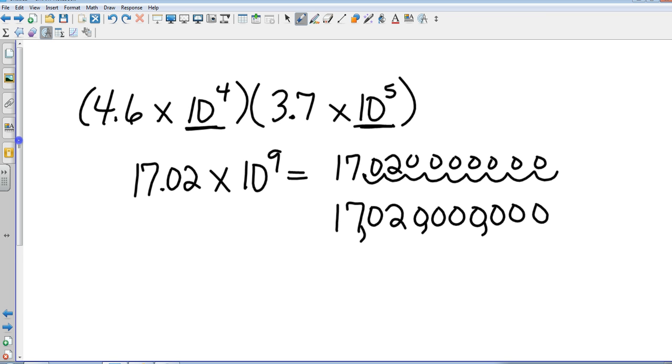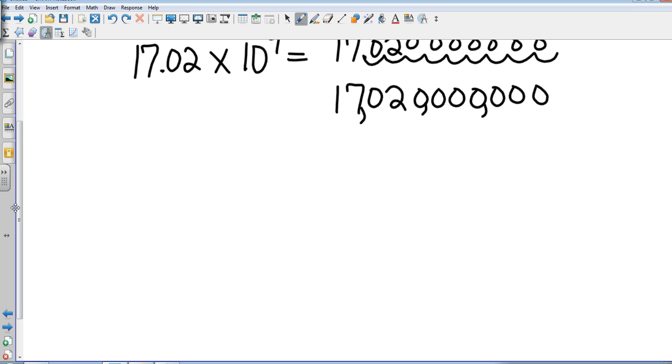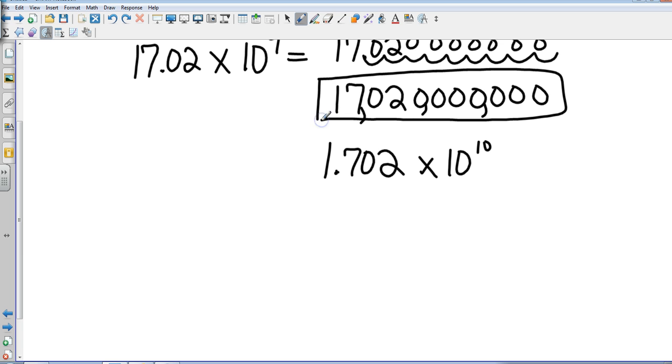And so now I want to take that and put it into scientific notation. So that's going to be 1.702. And then if I were to count those spaces over, that's going to be 10 spaces. So they will ask you to write it in standard form and also write it in scientific notation. So that's the steps to doing that.